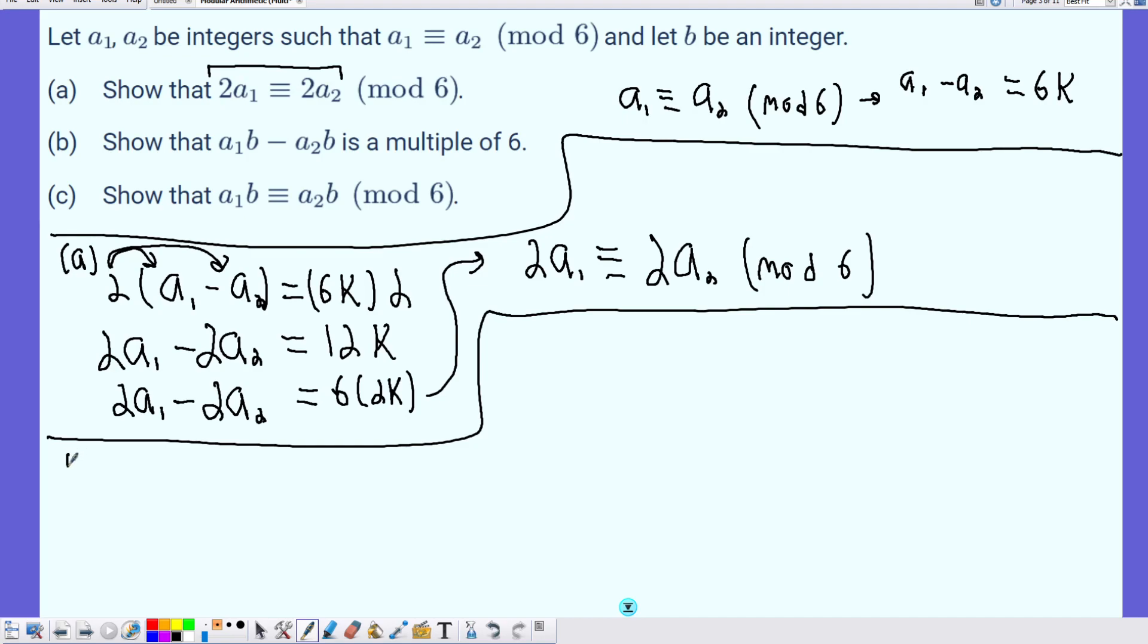Now, part B: show that A1 times B minus A2 times B is a multiple of 6. This is kind of just the same process that I did last time. I'm going to take the fact that A1 minus A2 is a multiple of 6, and I'm going to multiply that equation by B, just like in the last one we multiplied it by 2.